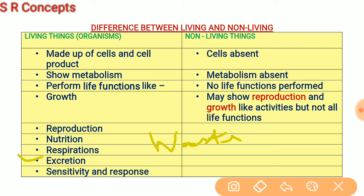During metabolism of proteins and other nitrogenous compounds, toxic substances like ammonia, urea, and uric acid may be formed inside the body. These toxic substances must be removed, and this process is known as excretion. So excretion is the removal of waste and toxic products from the body.